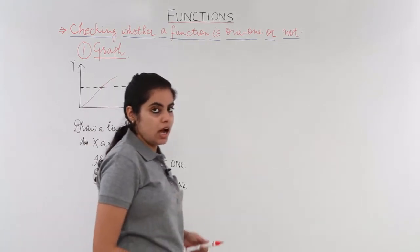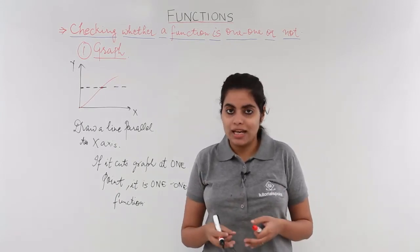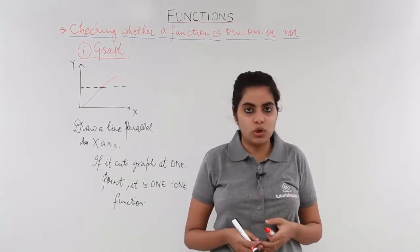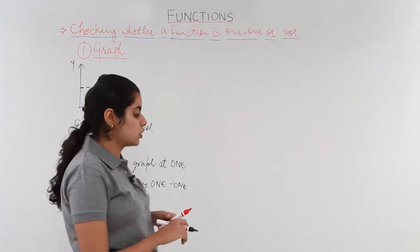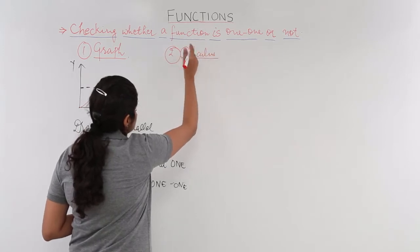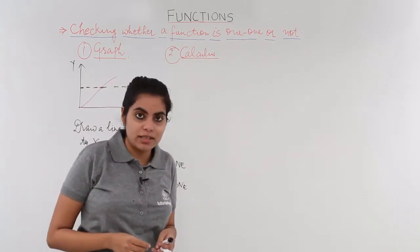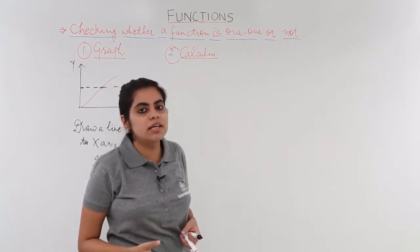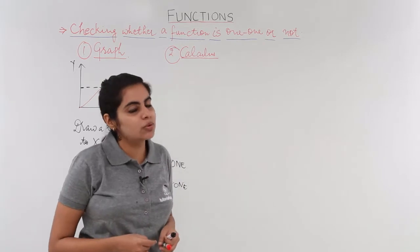But what if I do not have a graph given to me, but rather a function given to me in the form of a problem? Then how to go about solving it? Let's see another technique — how to find whether a function is one-one or not. This is the second technique, where we use calculus as an approach. Calculus is a branch of mathematics related to physics, and you must have studied the derivative test.